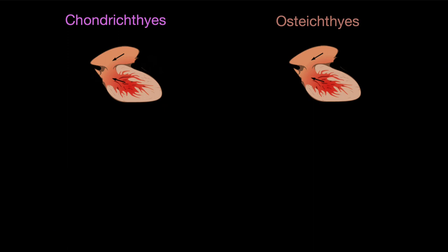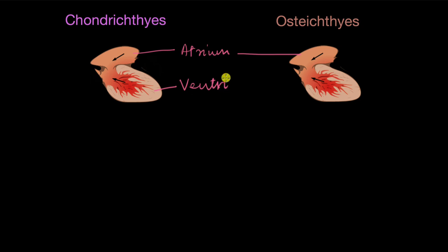A big similarity between these two classes of fish is the presence of a two-chambered heart — one atrium and one ventricle. We humans also have atria and ventricles, but in us there are two atria and two ventricles, whereas in fish there is only one of each type.